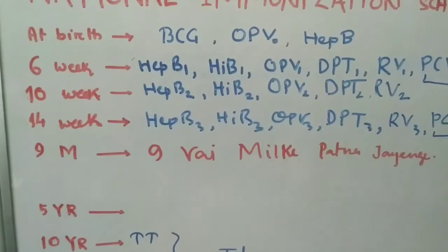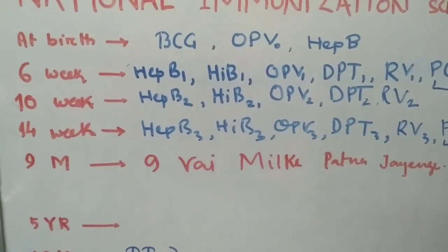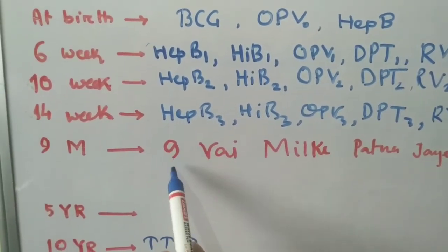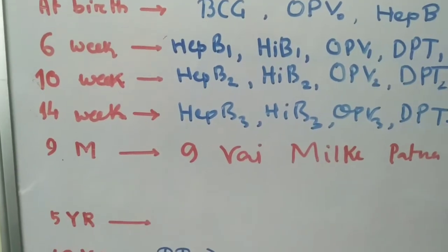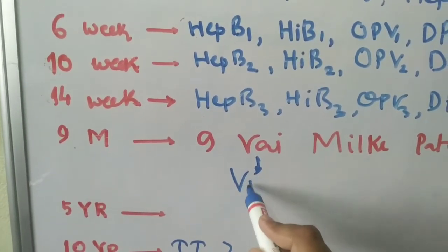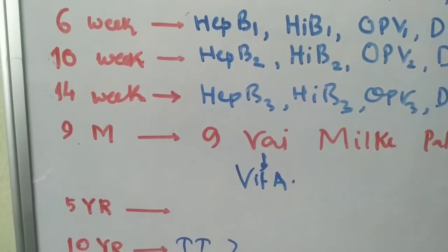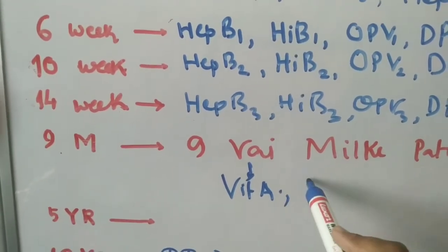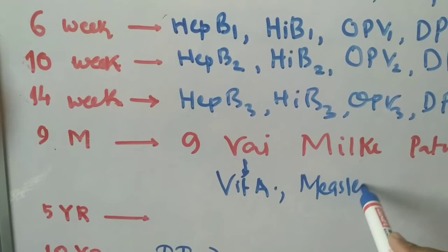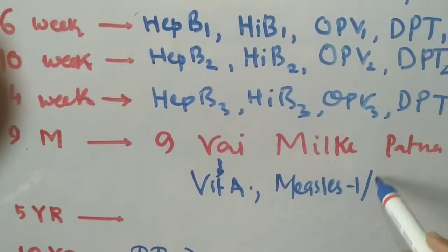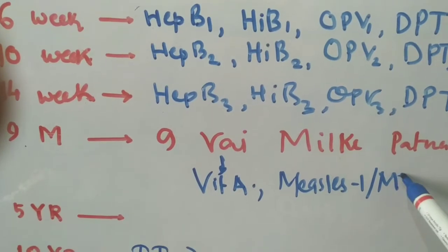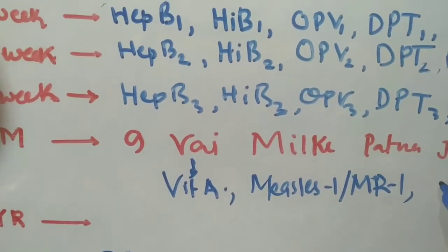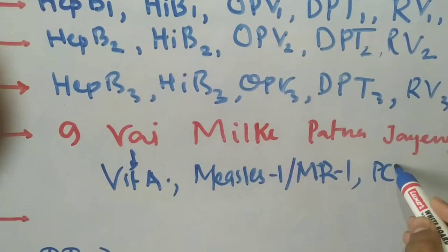For 9 months, the mnemonic is: 9 bhai milke patna jayenge. 9 stands for 9 months, bhai stands for Vitamin A, milke stands for Measles 1 (some states give MR1 also).